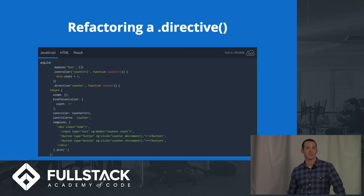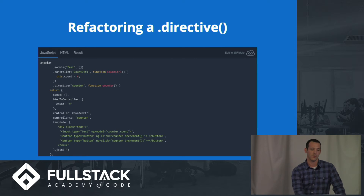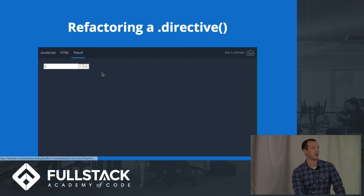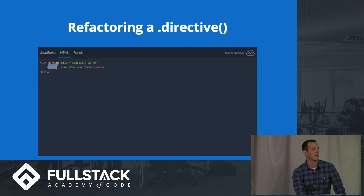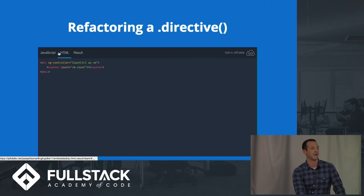I think the best way to show it is to take a pre-written directive and refactor it as a component. What we're dealing with here is a little counter directive — basically an input that has increment and decrement buttons that change the value in the input. The HTML, as you would expect, is an element directive.